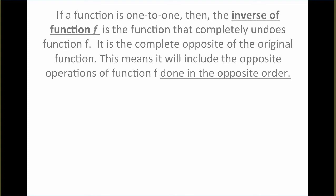If a function is one-to-one, then the inverse of that function is a function that completely undoes the function f. It's just the complete opposite of the original function. All of the x and y values will just flip-flop, and all of the operations will be the opposite and be done in the opposite order. We're going to look at a few examples of functions and how we could find their inverses.